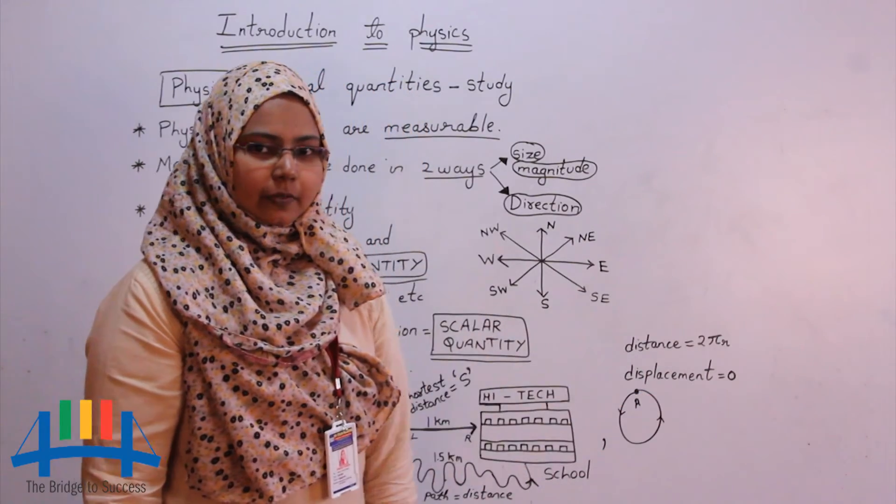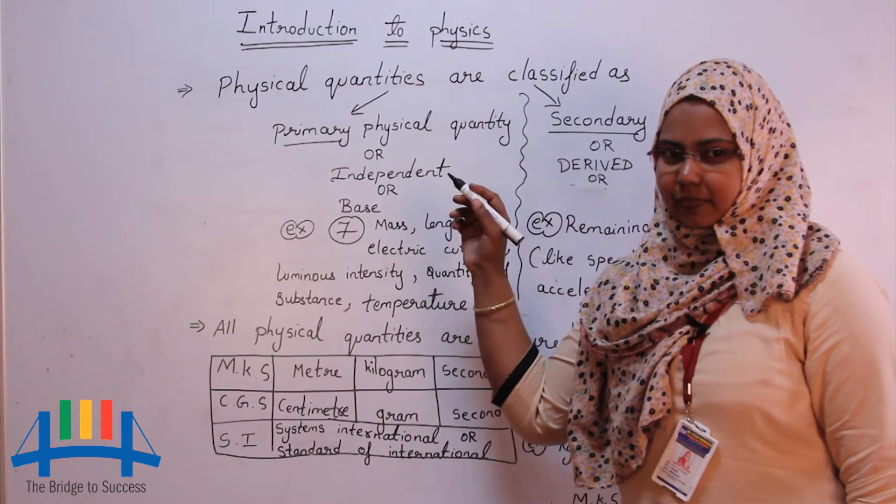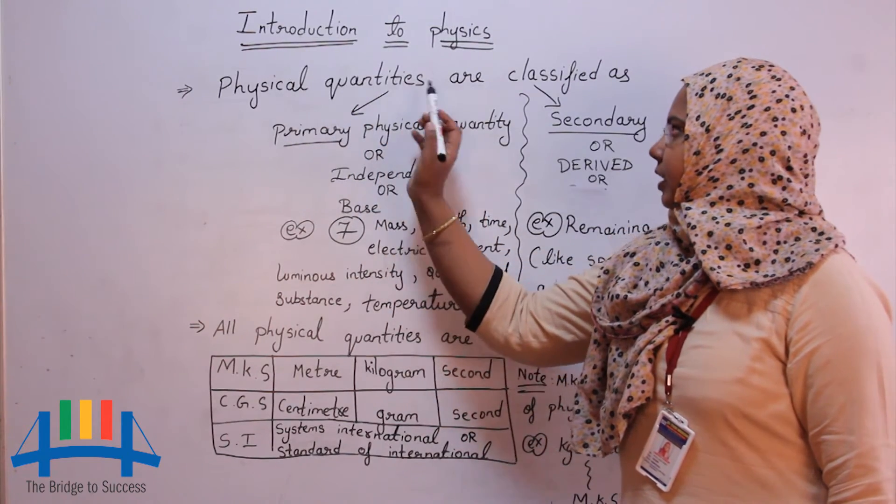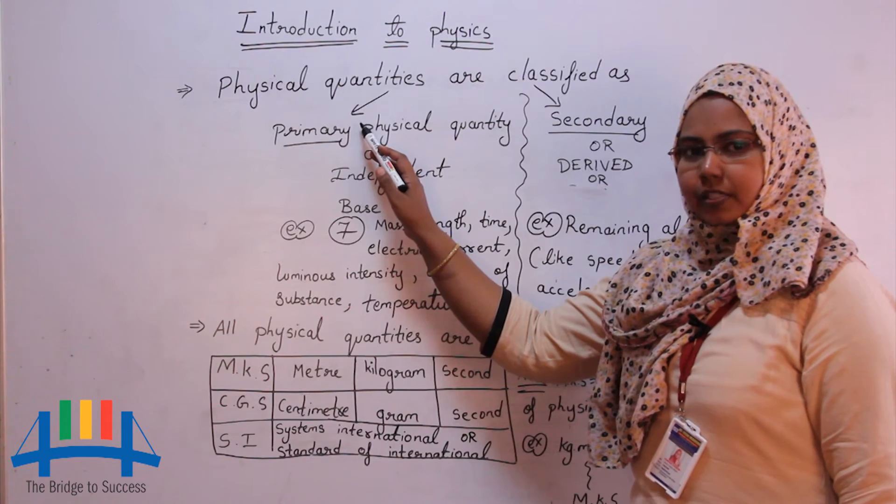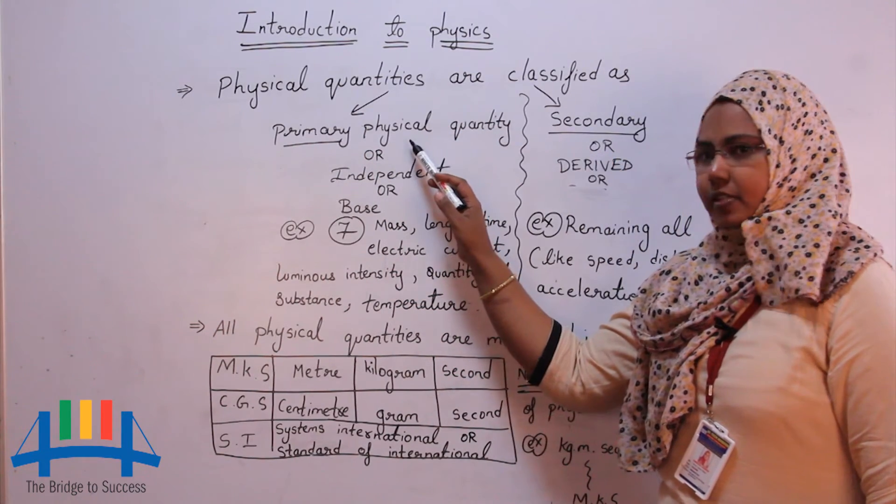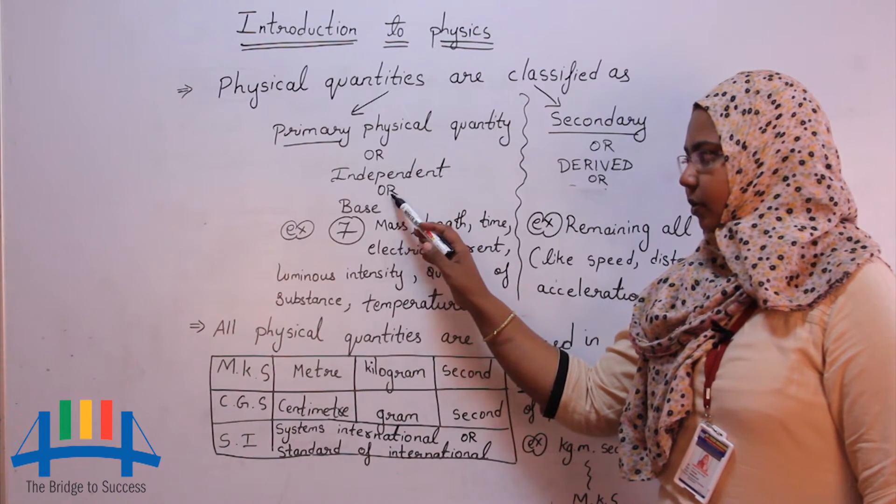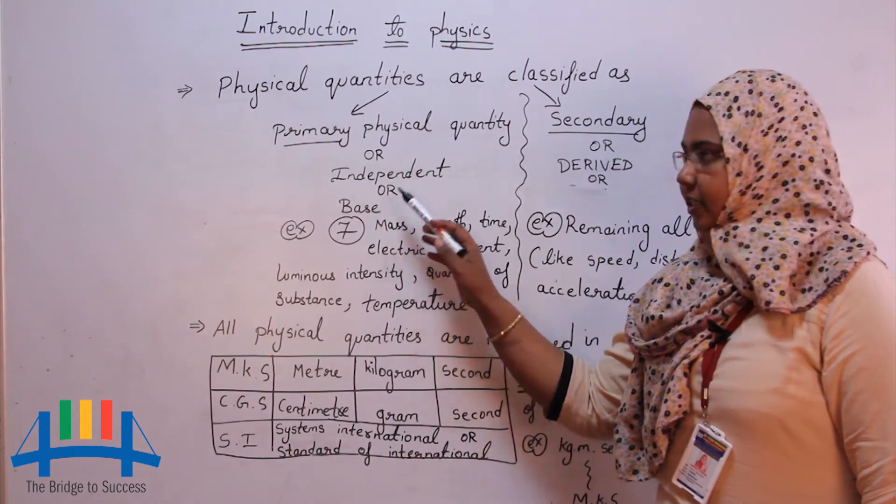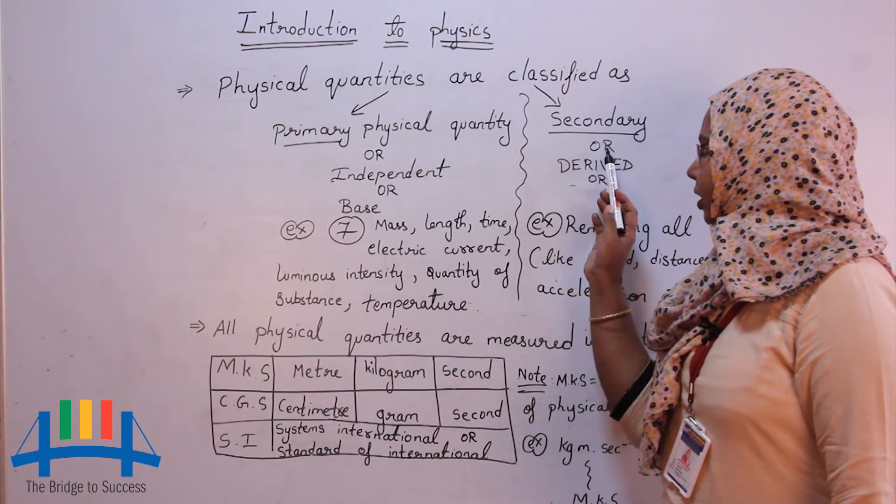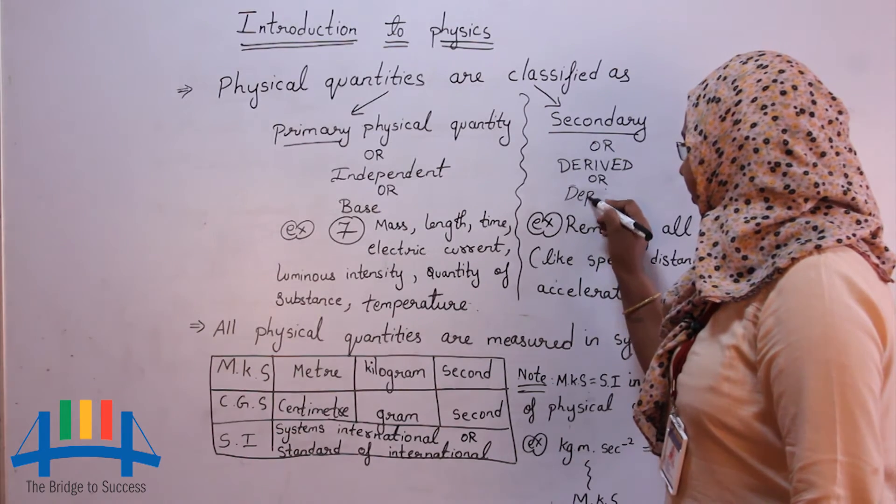By this, we end our topic. Now we are going to see how physical quantities are classified. Physical quantities are classified into two types. Primary physical quantities are also called as independent physical quantity or base physical quantity. Secondary physical quantity is also called as derived physical quantity or dependent physical quantity.